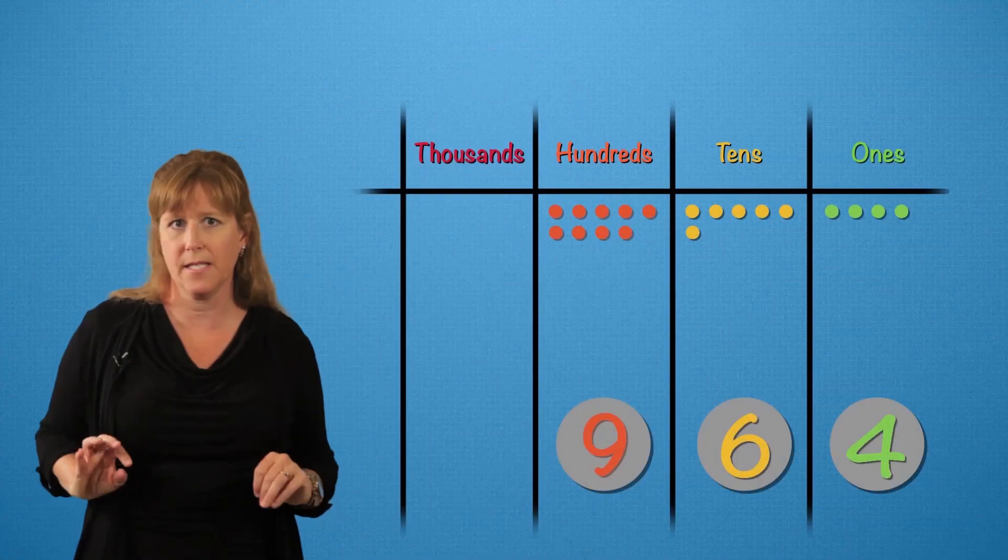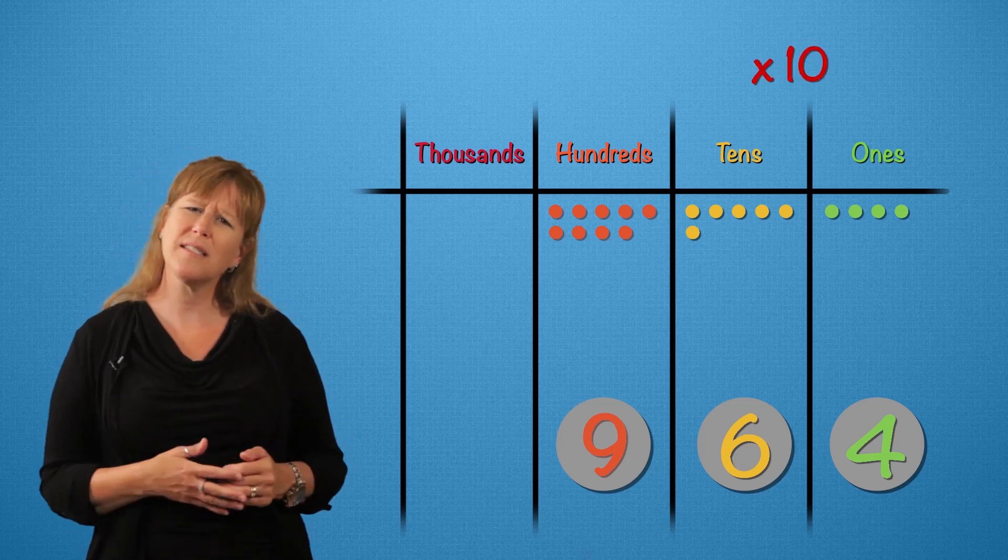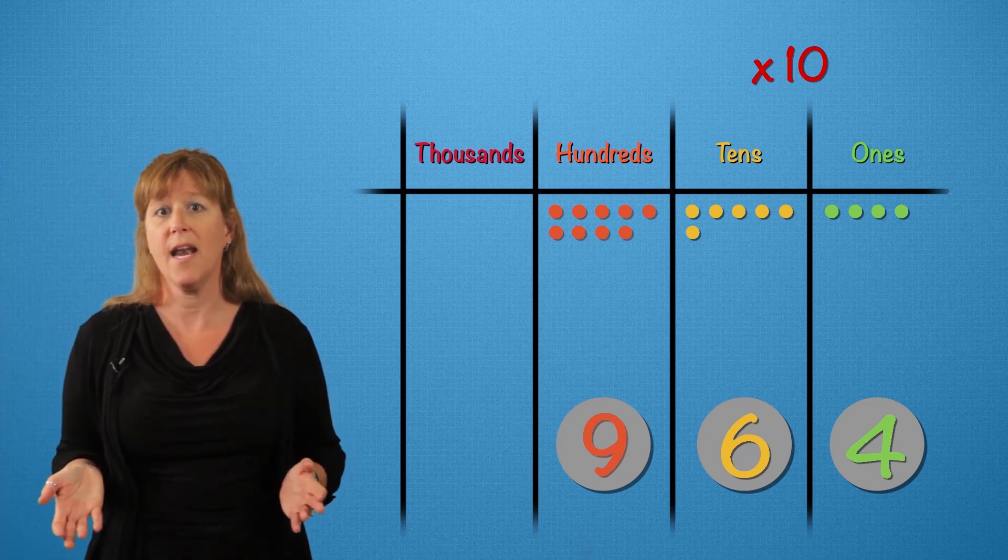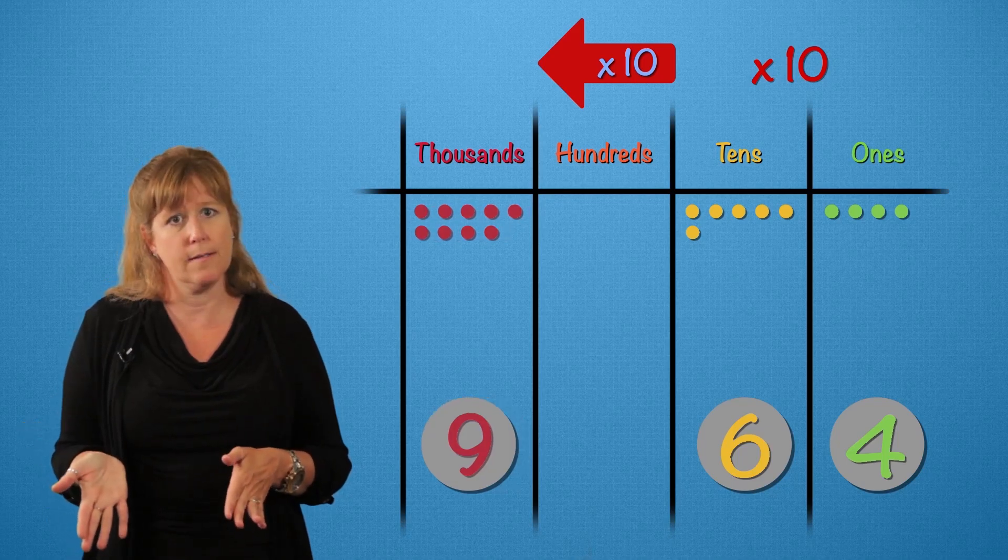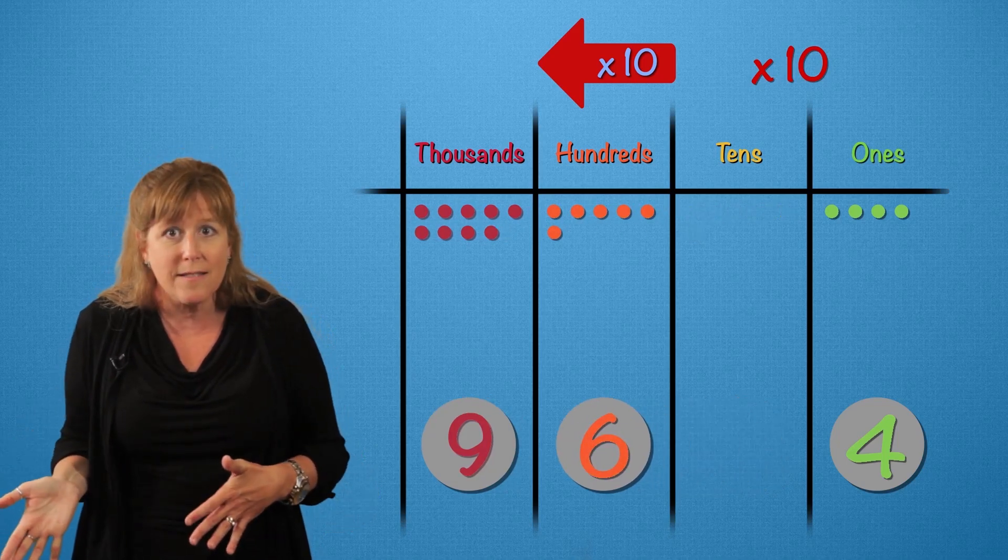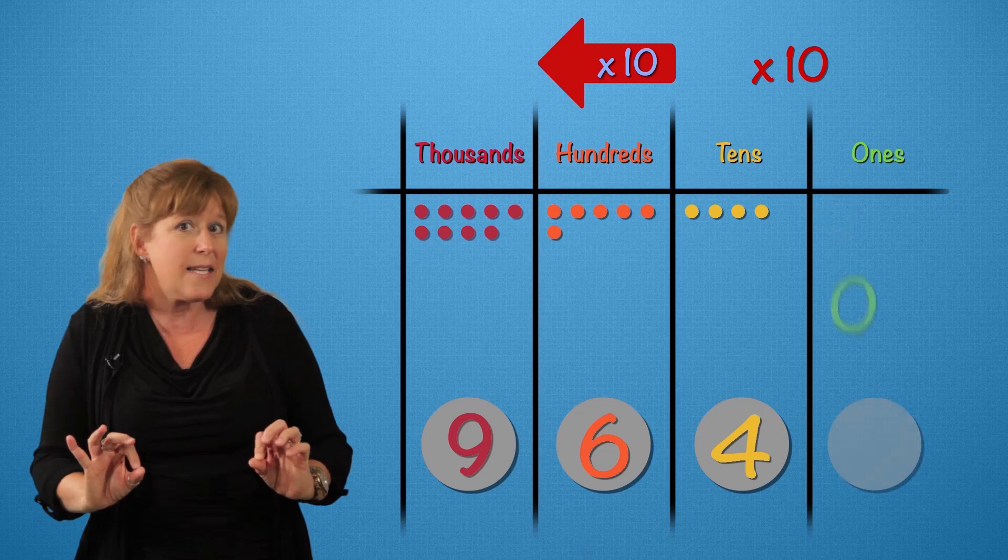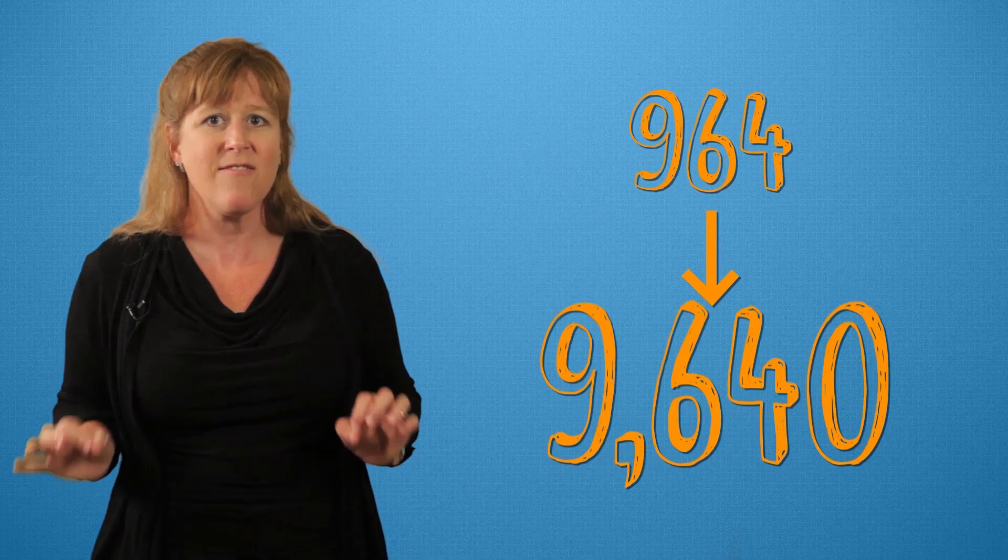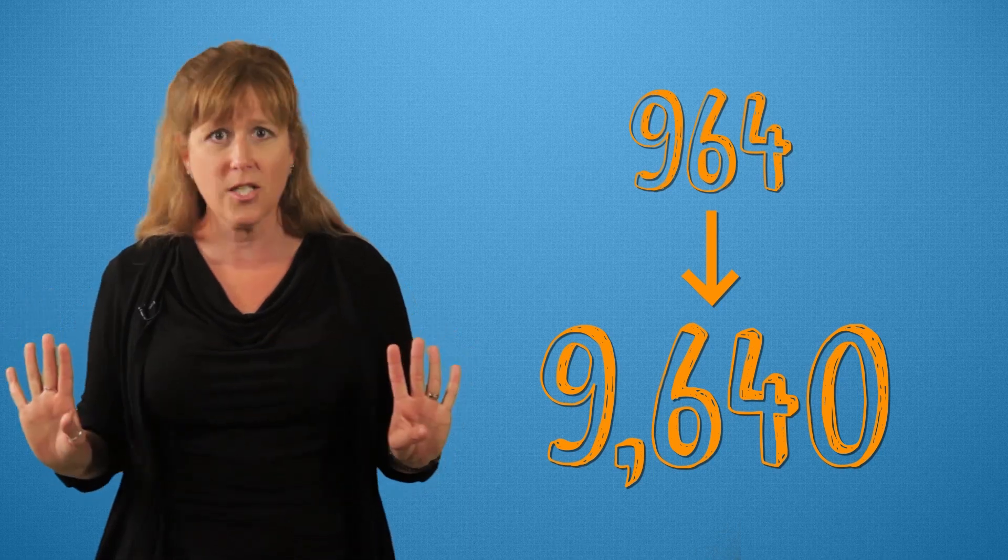Now what if we had this place value chart? Nine hundred sixty-four. And we multiplied it by ten. What is nine hundred sixty-four times ten? When we multiply by ten, everything moves one column to the left. So these nine hundreds move to nine thousands. The six tens move to six hundreds. And the four ones move to four tens. Then the zero squeezes in at the end. Nine thousand six hundred forty. Awesome. We went from nine hundred sixty-four to nine thousand six hundred and forty in one step. We have got to show this to Kevin.